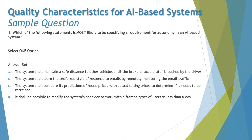Option A says: the system shall maintain a safe distance to other vehicles until the brake or accelerator is pushed by the driver. Autonomy means an AI-based system that tries to make decisions on its own without human intervention. This absolutely sounds like a requirement for an AI-based system that will take decisions on its own using specific sensors to maintain a safe distance from other vehicles.